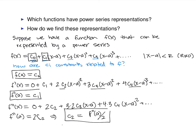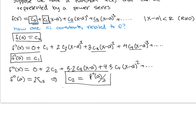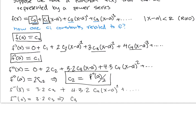Continuing to take derivatives: the third derivative will be 3 times 2 times c3, plus 4 times 3 times 2 times c4 times x minus a, plus other terms. When you plug in a, you get 3 times 2 times c3, which implies c3 equals the third derivative at a over 3 times 2. And 3 times 2 is actually 3 factorial.